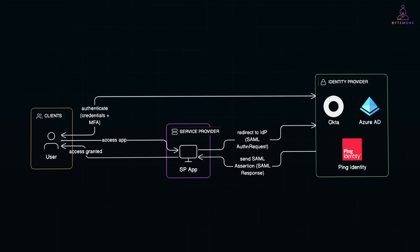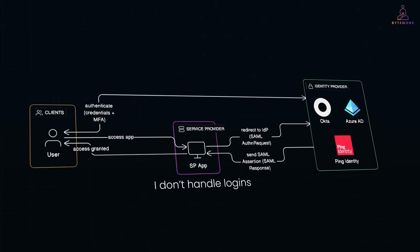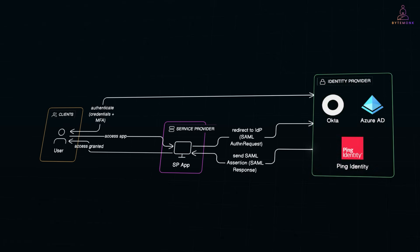Here's the flow. A user tries to access an app — the service provider, or SP. The app says, I don't handle logins. Go talk to the identity provider, IDP — like Okta, Azure AD, or Ping Identity. The IDP authenticates the user, maybe username and password plus MFA. Once authenticated, the IDP sends a SAML assertion, an XML document, back to the service provider. This assertion says this user is who they claim to be, and can include attributes like roles or group memberships. The SP verifies the IDP signature and grants access.